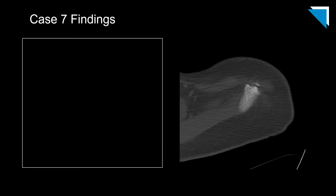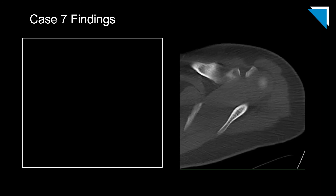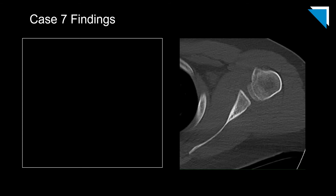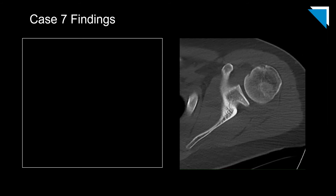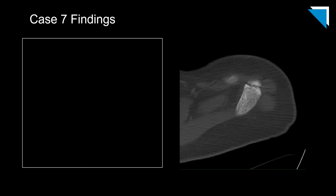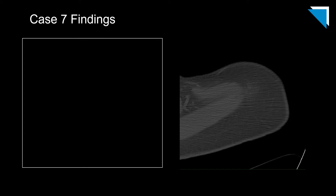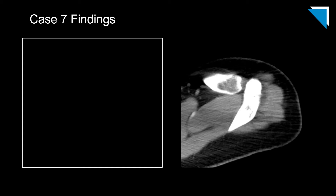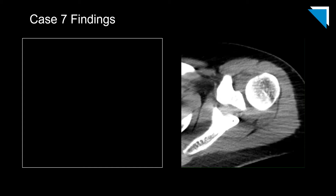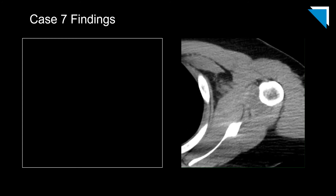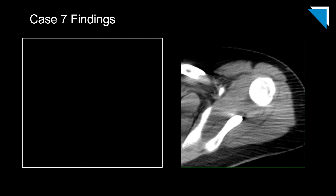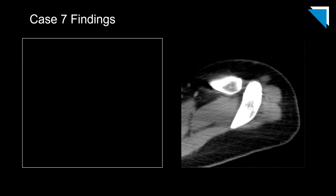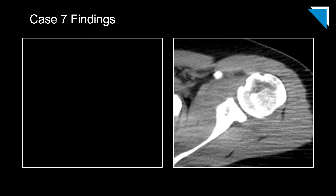Our next case is a 17-year-old boy with pain status post trauma. These are axial images from a CT scan of the shoulder. It's very important in musculoskeletal imaging to know the normal anatomy so you can look for abnormalities. In this case there is an os acromiale, a normal variant often mistaken for a fracture. Always remember to review the soft tissue windows, as findings there can draw your attention to osseous pathology you may have missed on the bone windows. There is a large lipohemarthrosis.